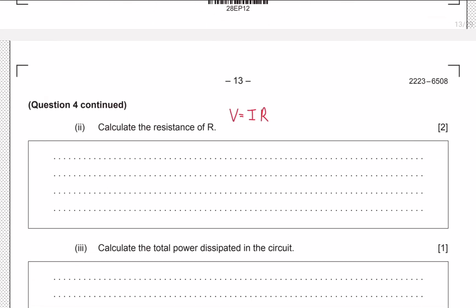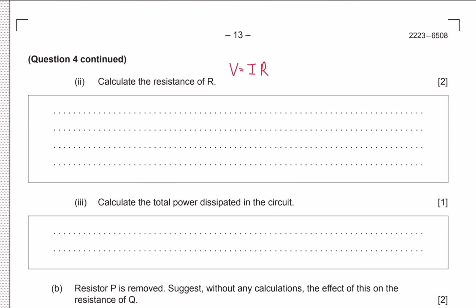Now we know the current through R is 0.05 amps and the voltage across R is 1.4 volts. So the resistance is V over I: 1.4 divided by 0.05, which gives us 28 ohms.